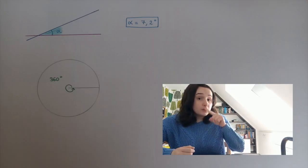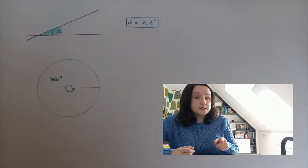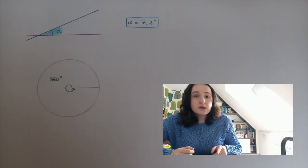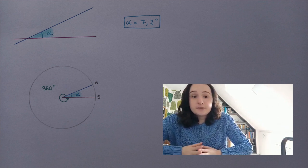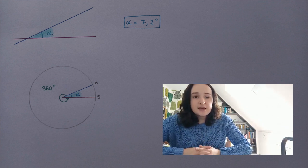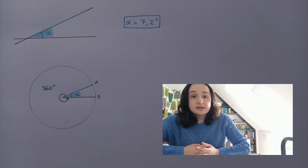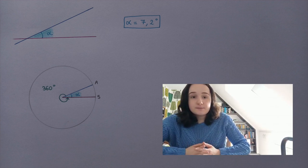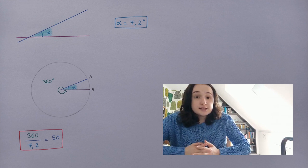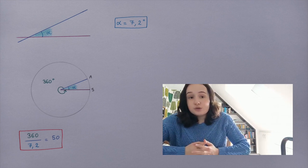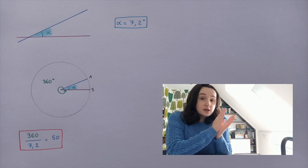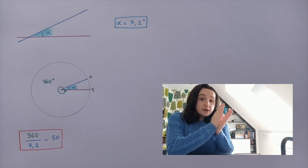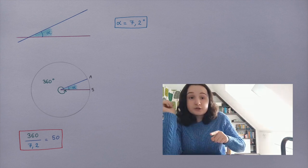Indeed, the full tour of the Earth represents 360 degrees. Since the difference is 7.2 degrees between Alexandria and Syene, that means the two cities are 7.2 degrees apart on the Earth's surface. 360 divided by 7.2 gives 50, so by copying the 7.2 degree angle 50 times, you go all the way around the Earth.